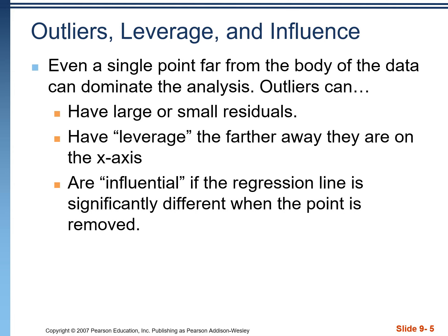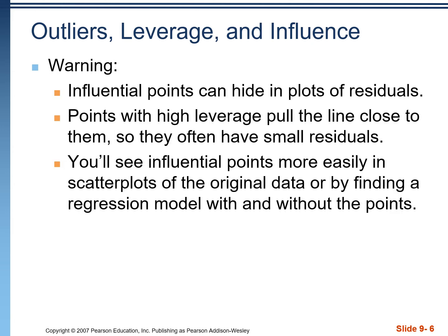An influential point is any point that would change the regression line if it's removed from the data. In many cases, outliers are going to jump out of a residual plot and we'll be able to see it, but that's not always the case with influential points. Oftentimes they're going to hide, because as an influential point it's affecting the regression line — pulling the line towards the point and creating a small residual for itself. For that reason, it's easier to see influential points in the scatter plot compared to the residual plot.